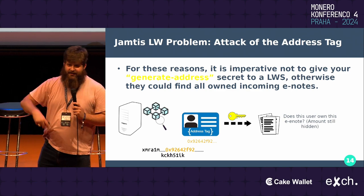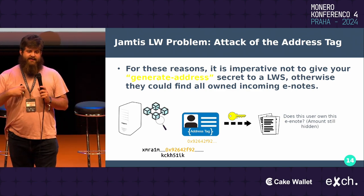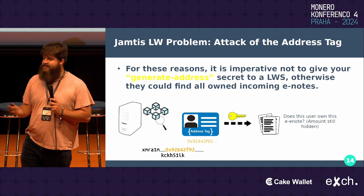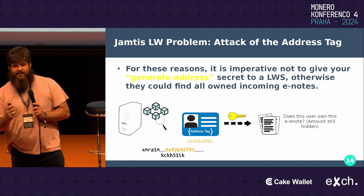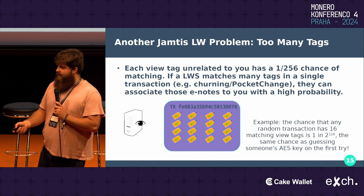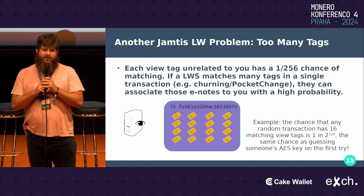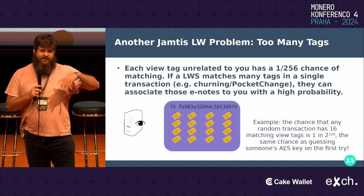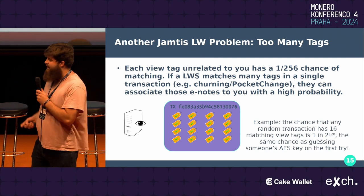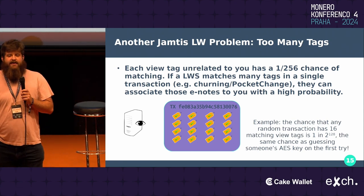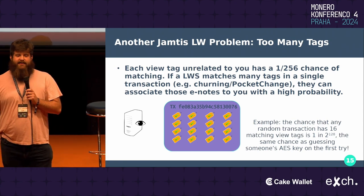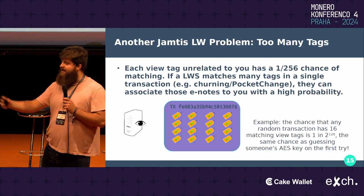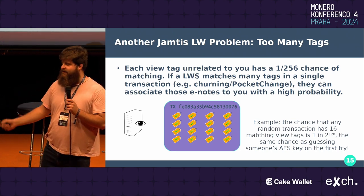In a similar vein, if you already know the address and you see the address tag while scanning, you know for sure they own that e-note, which is not ideal. Further, you cannot give someone a secret that lets them generate addresses on your behalf, because if you do, they can use the address tags to find out all the times you've received Monero. They still don't know the amounts, but they know for sure you are involved in receiving those transactions. Also, if you have too many view tags within the same transaction matching, you can accumulate exponentially the probability — for example, 16 matching view tags is 8 bits times 16, or 128 bits, which should basically never happen randomly. The probability of that would be the same as guessing someone's AES key on the first try.